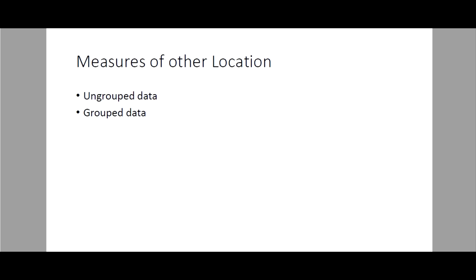Good day. We'll discuss now measures of other locations. We're done discussing measures of central tendency, which measures where the center or where most of the data is centralized. Next we have the measures of dispersion — it measures how close or far the data are from each other. If the value is small, they are homogeneous or closer to each other; if the value is high, the values are far from each other, so heterogeneous. Now we'll discuss these measures of other location — we have two types: ungrouped data and grouped data.